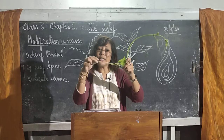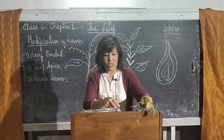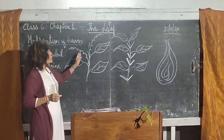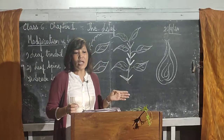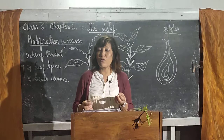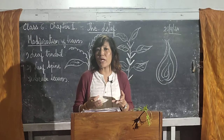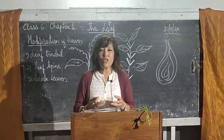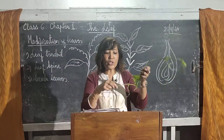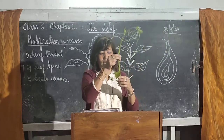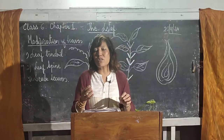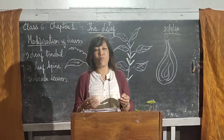This type of modification of leaf — leaf tendril — is found in plants which have weak stems, especially climbers. Their stem is so weak that they need support to grow. So to give them support, these leaves are modified into a tendril. This tendril stretches out and climbs or twines around a nearby stick or wall to provide support to the plant.